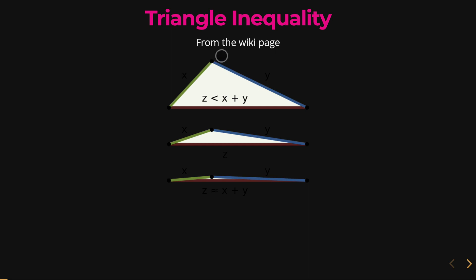Now let's review the triangle inequality that we should know from geometry. Let's say we have a triangle here with sides x, y, and z. Side x plus side y will always be greater than that third side z.